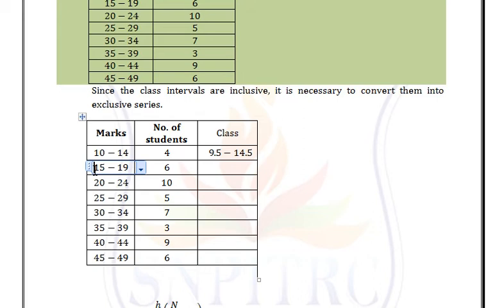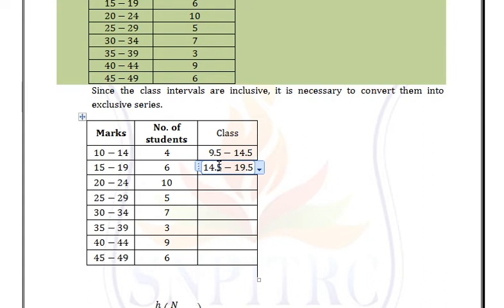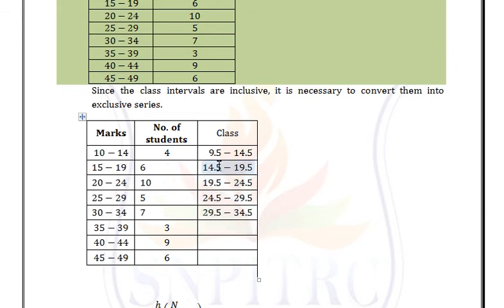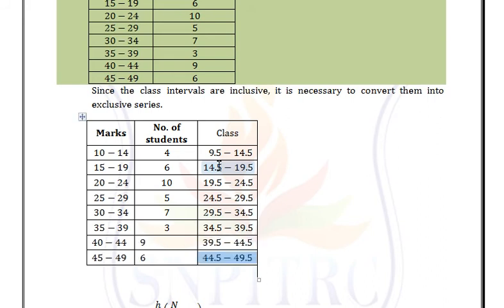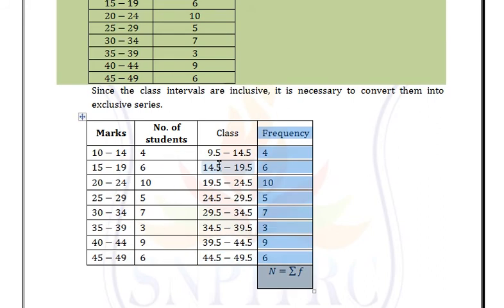The ending point 14.5 and the starting point 14.5 are the same, confirming the class is now in exclusive form. Similarly, convert all remaining classes to exclusive form. Then find the cumulative frequency in less than form.